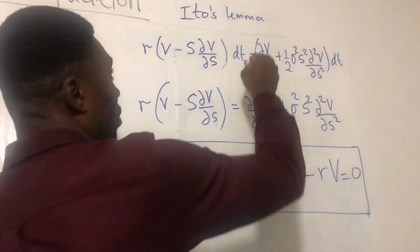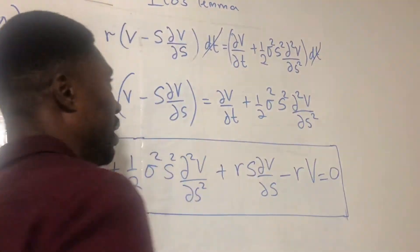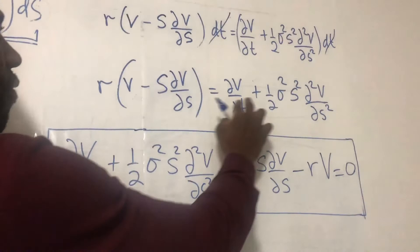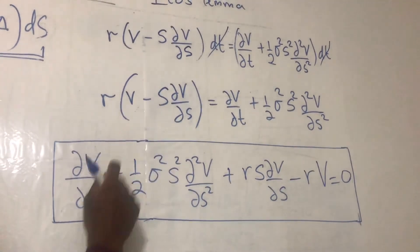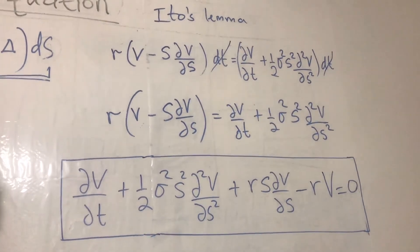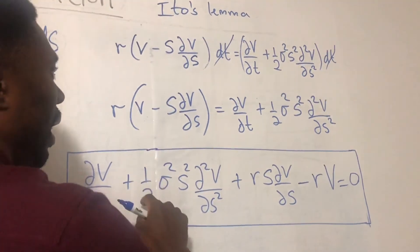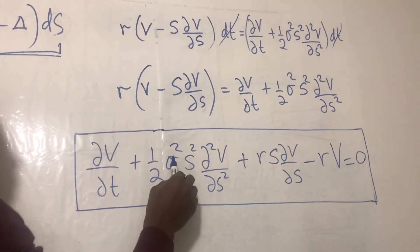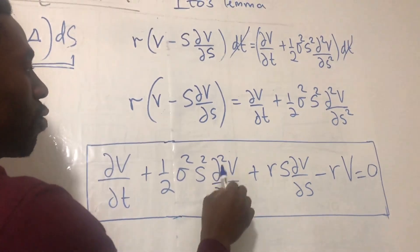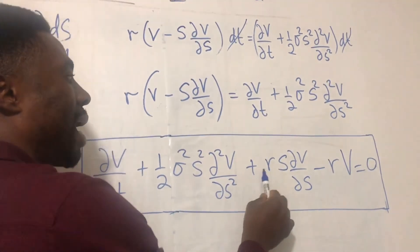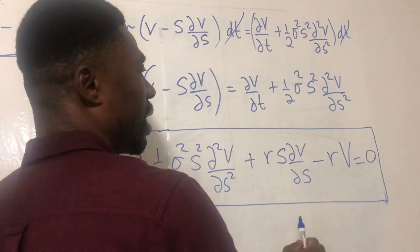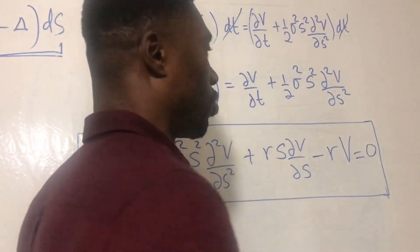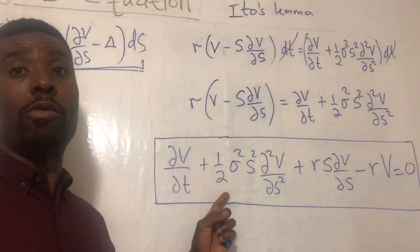We can then cancel the variables by dt to get rid of dt. And we have this remaining. And then all we have to do now is to expand and rearrange. So if we expand this bracket here and rearrange, we have ∂V/∂t + one half σ² S² ∂²V/∂S² + rS ∂V/∂S - rV equals zero. And this is the famous Black-Scholes equation.